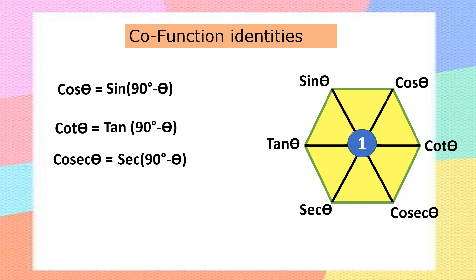Taking the co-function identities in the reverse direction: cos theta equals sin(90° − theta). Cot theta equals tan(90° − theta). Cosecant theta equals secant(90° − theta).